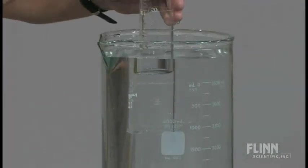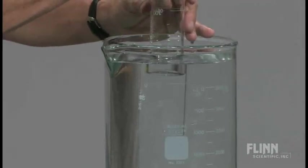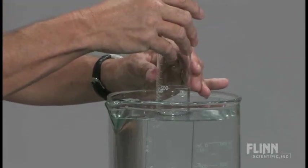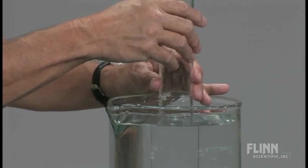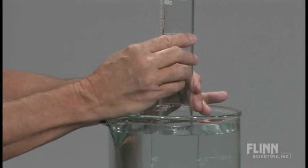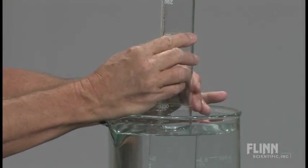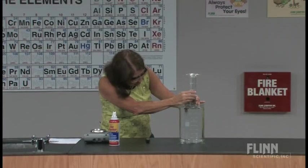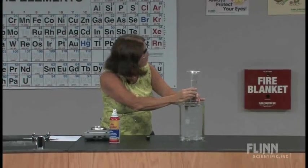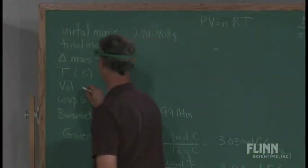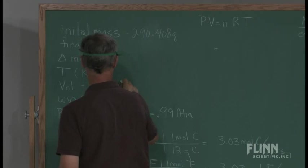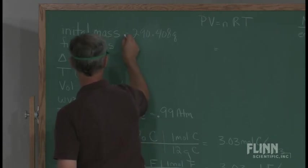The next thing I need to do is read the volume of the gas collected, and I'm going to try this by raising the graduated cylinder until the water levels inside the tube are the same as the water levels outside the tube. It's a little bit more than 240 milliliters. I'm going to say 244 milliliters of gas was collected.